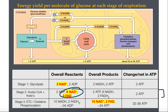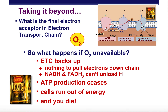What happens if you don't have oxygen? Without oxygen, you run out of your main source of NAD+ and FAD. The electron transport chain backs up because there's no oxygen to receive the electron, so you can't pull electrons out of NADH and FADH — they just build up. There's no way to do stage 1 or stage 2, and because you're not pulling energy out of them, you can't finish stage 3 and you don't make energy. Basically, your cell runs out of energy and dies.